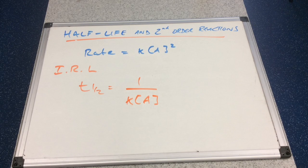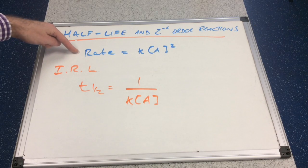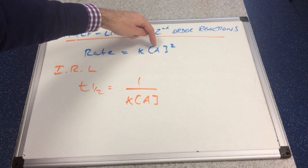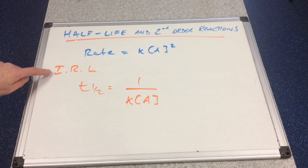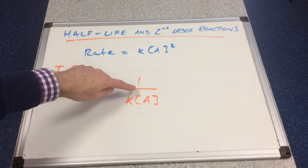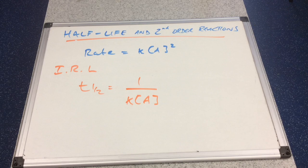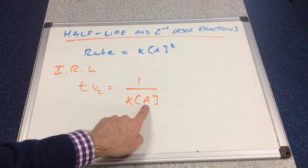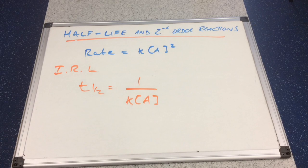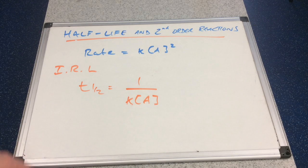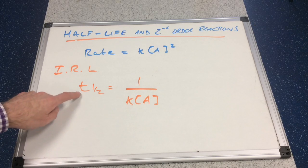The rate equation for a second-order reaction is: rate equals K times the concentration of the reactant squared. The integrated rate law for this comes out as: half-life equals 1 over K times the concentration. So as you lower the concentration, you're making the denominator smaller, and 1 over a smaller denominator gives you a bigger number — so the half-life increases.